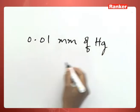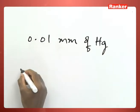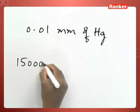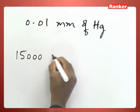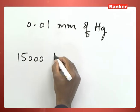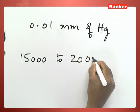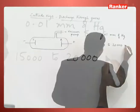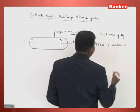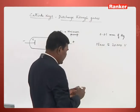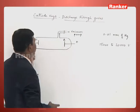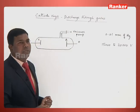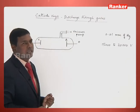The pressure should be about 0.01 mm of mercury and the applied potential about 15,000 to 20,000 volts. Under these conditions, the entire tube is filled with a dark space, which we call Crookes' dark space.